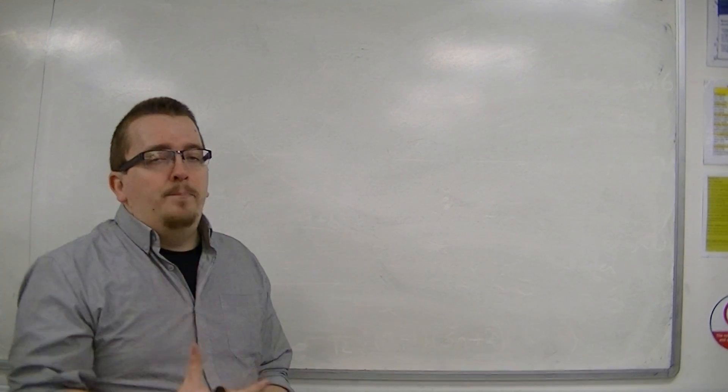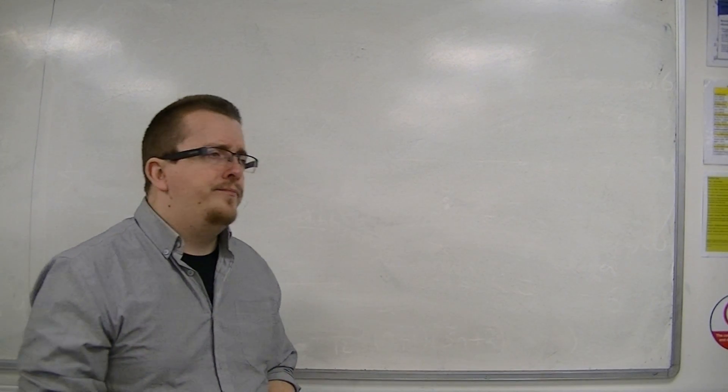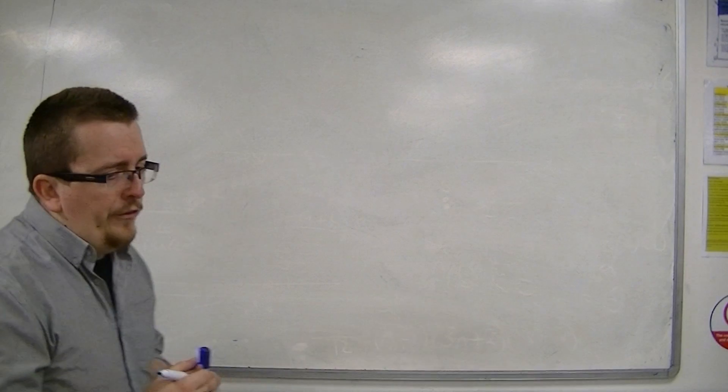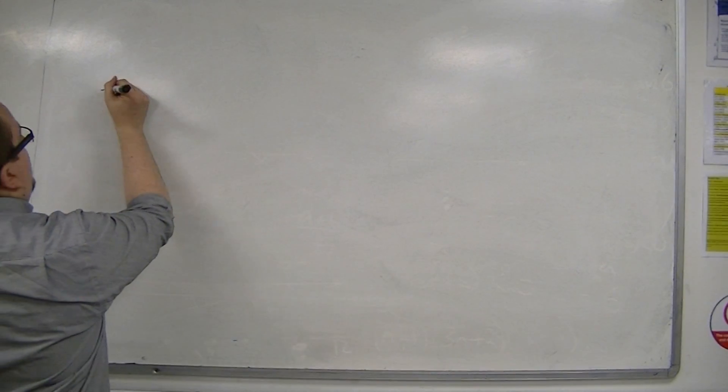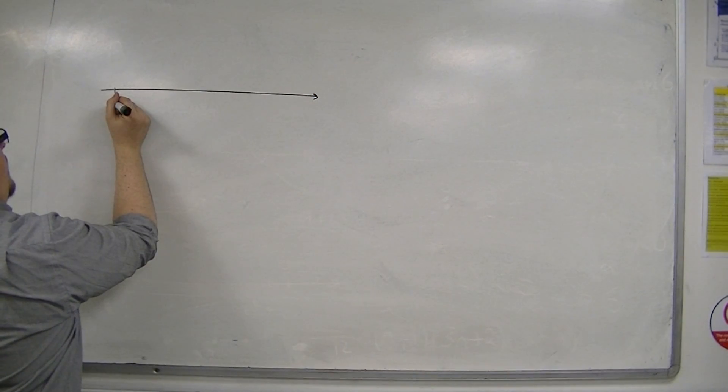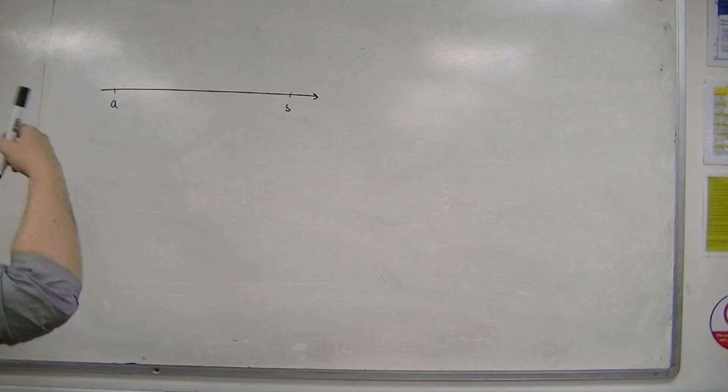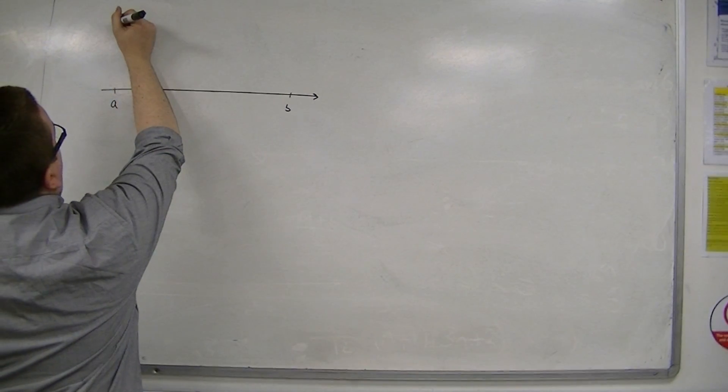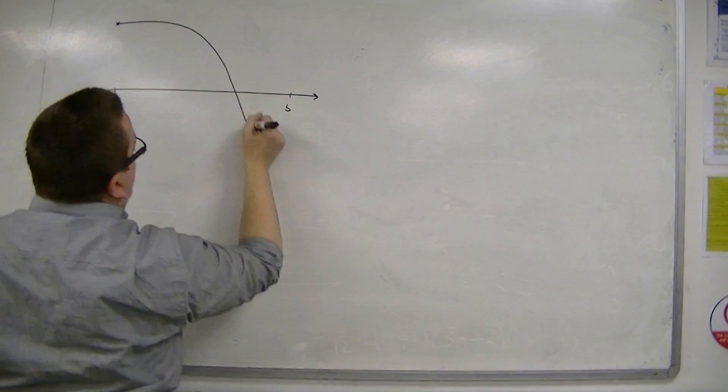Now the bisection method can be quite slow. That's one of its problems. And so, another method is known as linear interpolation. So, let's say that I'm looking at the points a and b, and we have a curve that goes something like this.